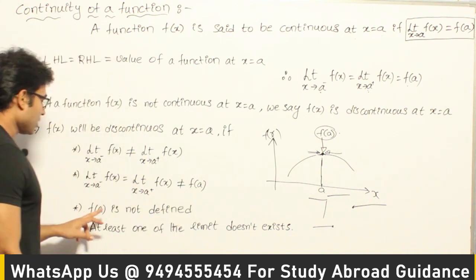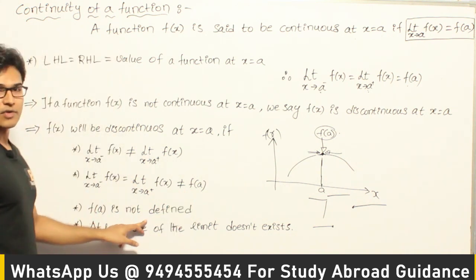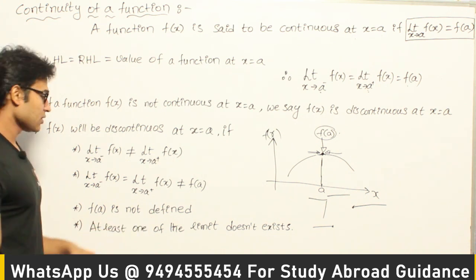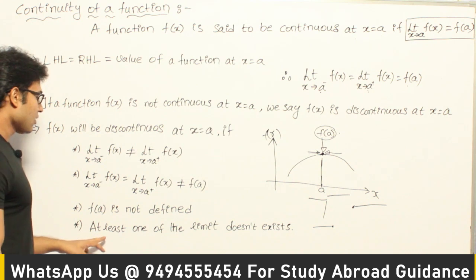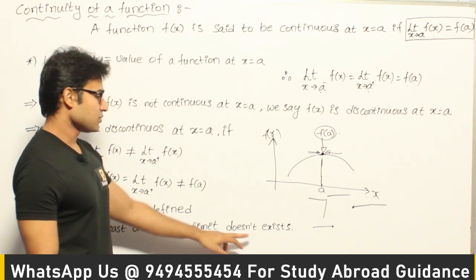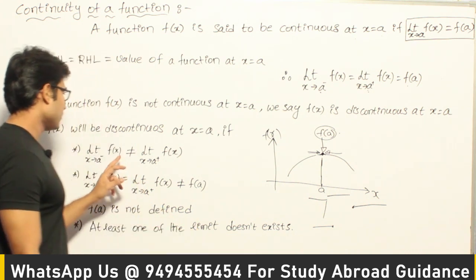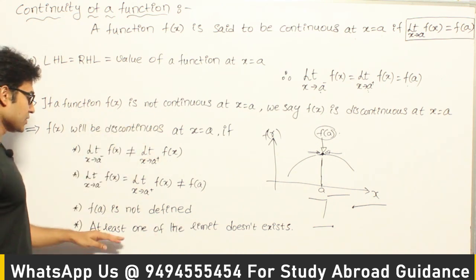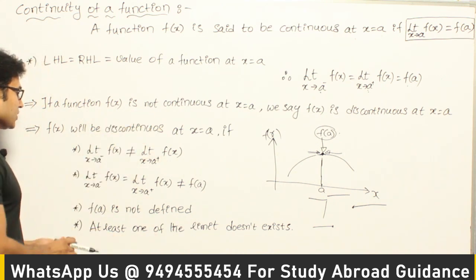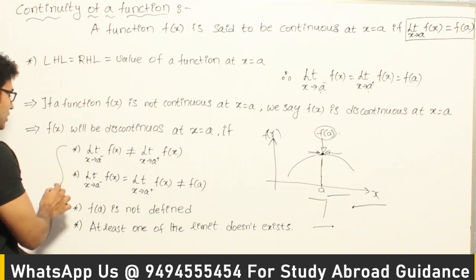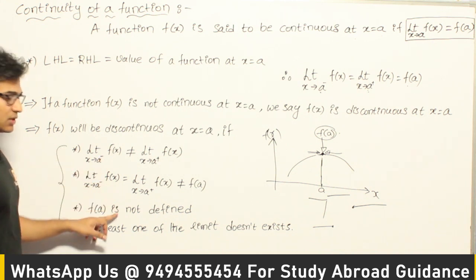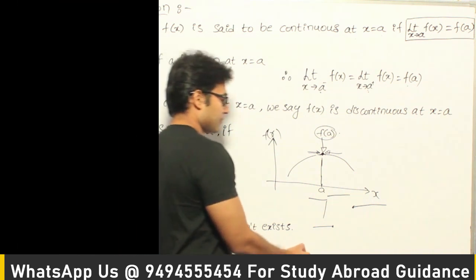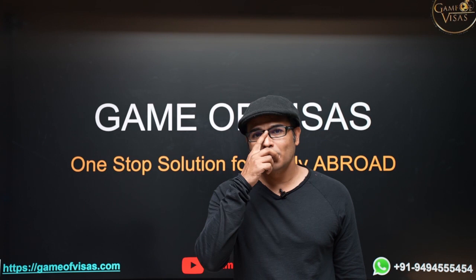Or if f(a) is not defined — which could be 0/0 or ∞/∞ — in that case also it is not continuous. Or if at least one of the limits does not exist — either the left-hand limit or the right-hand limit — then it is also discontinuous. If any of these four conditions hold, you can say that it is discontinuous.